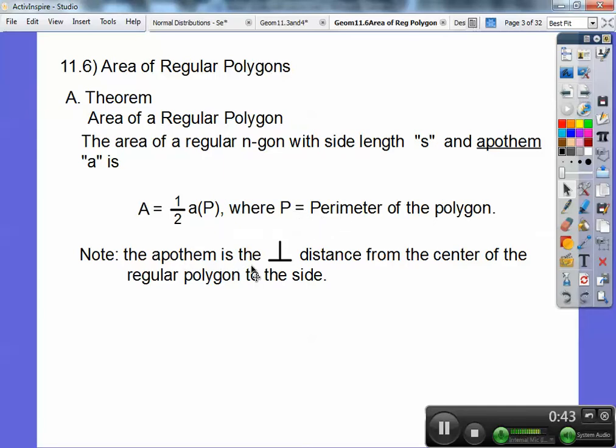So the apothem, I have a picture for you here, the apothem is the perpendicular distance from the center of the regular polygon to the side. Here's a picture right here. So here's a regular hexagon right here, regular polygons have a center right there in the middle. This guy is my apothem. It goes perpendicularly to a side right there.